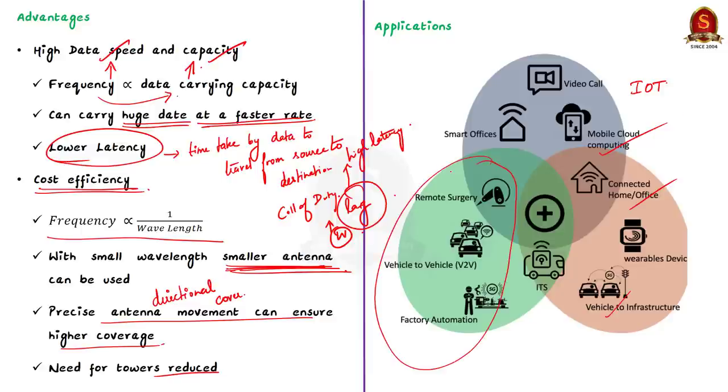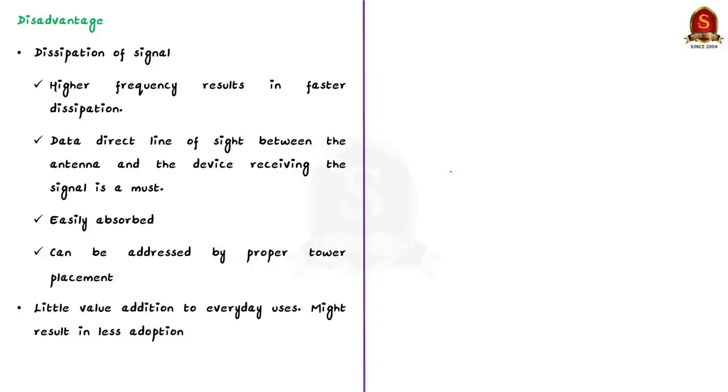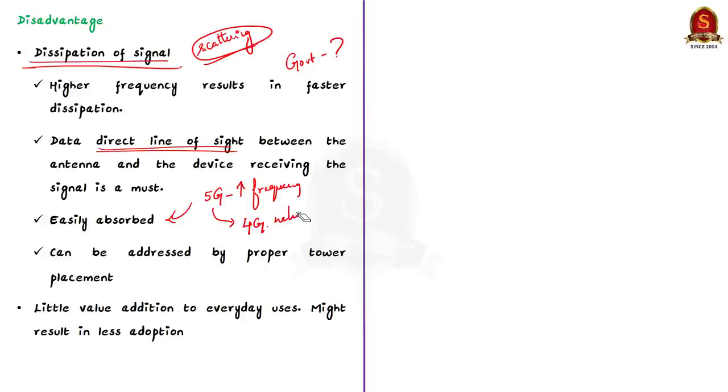Now with this information, finally let us see the major disadvantage of 5G technology. The first one is dissipation of signal. Earlier while discussing the advantage, you might have had a question. If higher frequency equals high speed and higher data carrying capacity, then why don't governments offer even higher frequency radio waves for auction? There is an issue in this. In the case of electromagnetic waves with high frequency, they get scattered very easily. So to ensure transfer of data, direct line of sight between the antenna and the device receiving the signal must be ensured. This is difficult to ensure all the time. Since the 5G have higher frequency, they are easily absorbed by humidity, rain and other objects when compared to 4G. Sometimes when you move away from the 5G, your cell phone automatically switches back to 4G network. But this can be addressed by strategically placing tiny antennas in places where it is most needed.